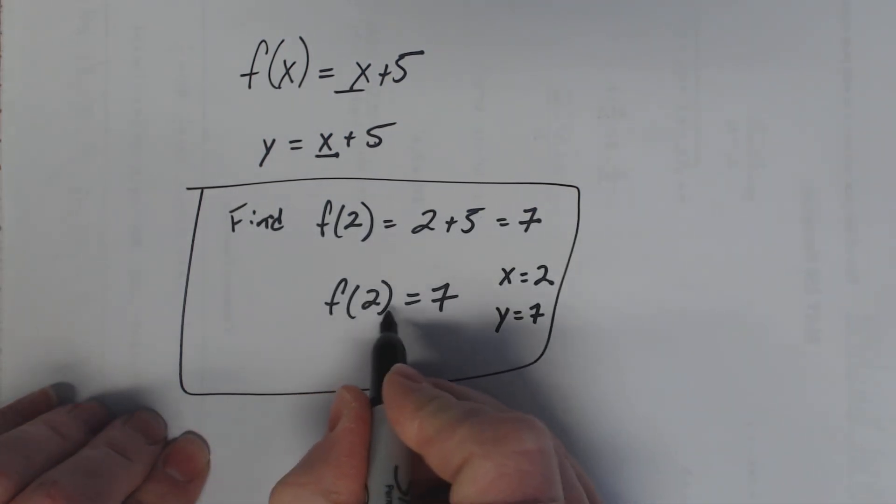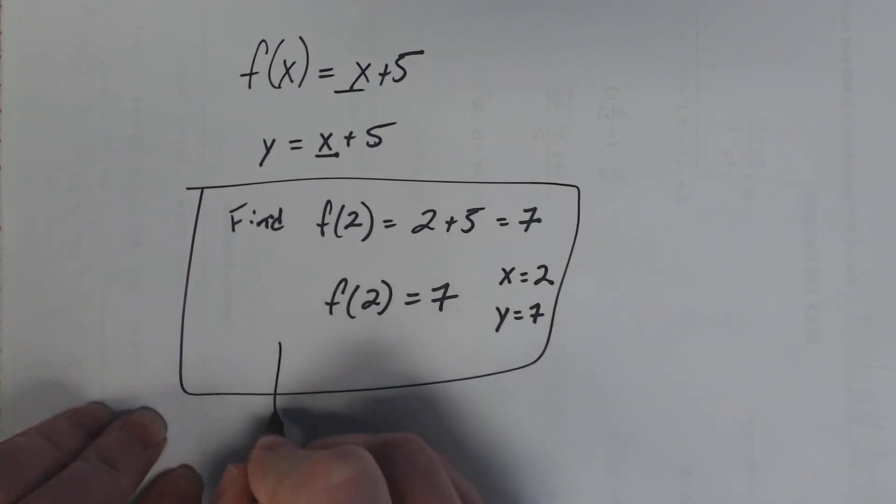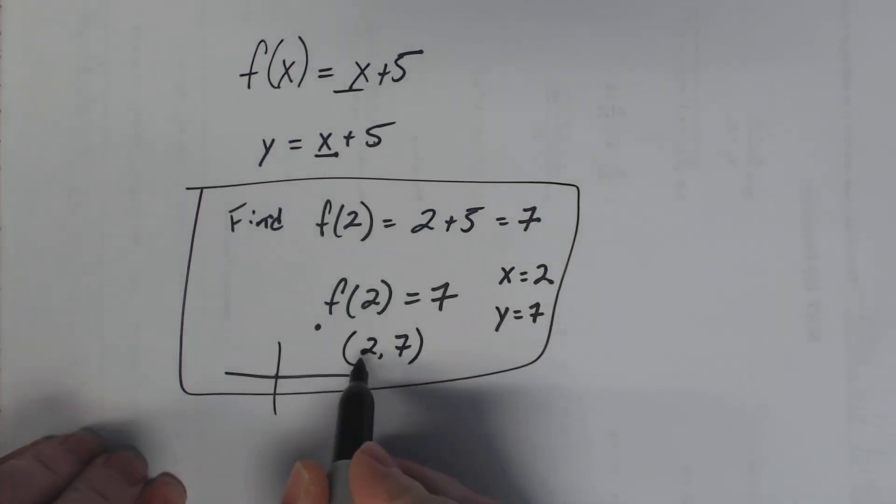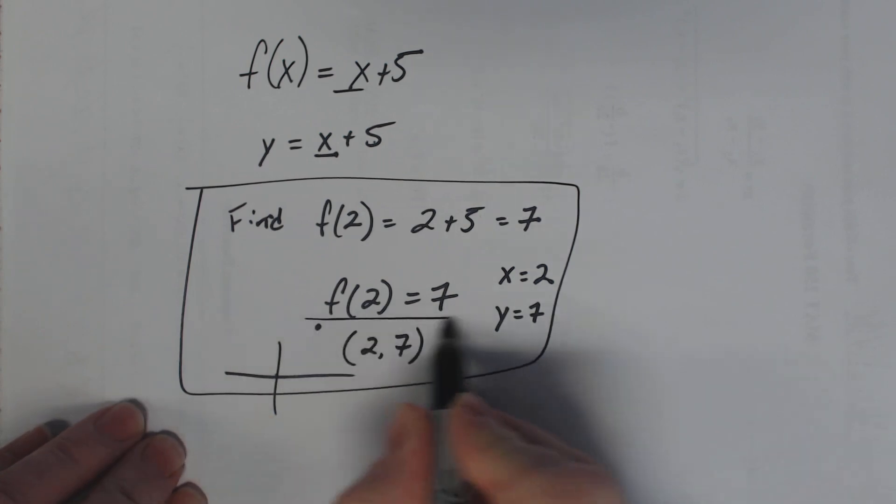So if you wrote f(2) = 7, that's the same thing as writing a point. Like you're going to plot points over 2 and up 7. That's the same thing, (2, 7). So you can rewrite points in what I call function notation.